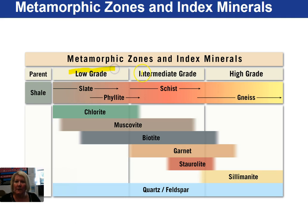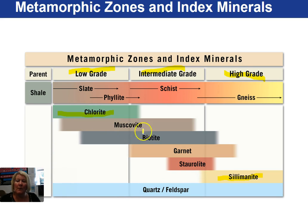The metamorphic zones are low, intermediate, and high grade, representing the transition from shale to slate, phyllite, schist, and gneiss. The index minerals found in these various grades include chlorite for low-grade metamorphic rocks and sillimanite at the high extreme for very high-grade metamorphic rocks. Other good index minerals are muscovite, biotite, garnet, staurolite, and kyanite. Quartz and feldspar are not good index minerals because they are stable across the entire zone of metamorphism and tell you nothing about temperatures and pressures.